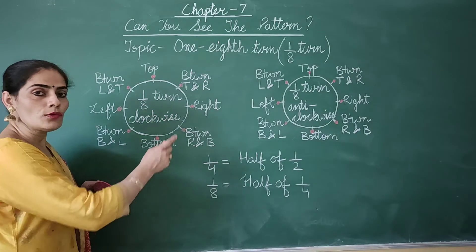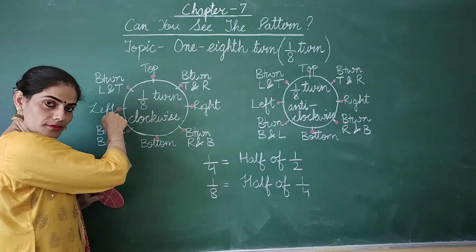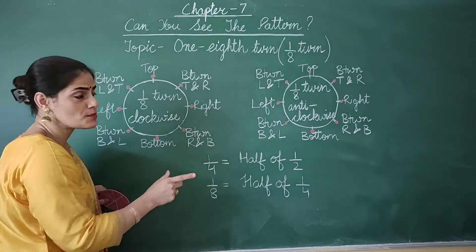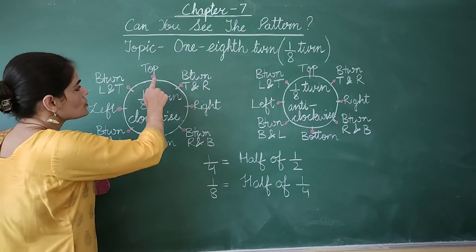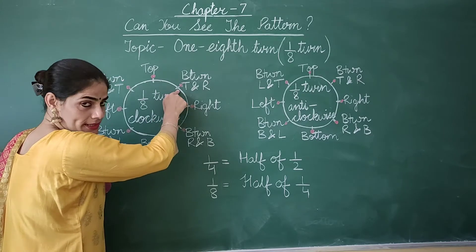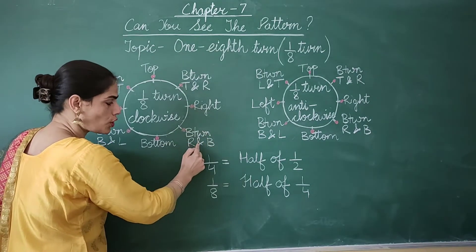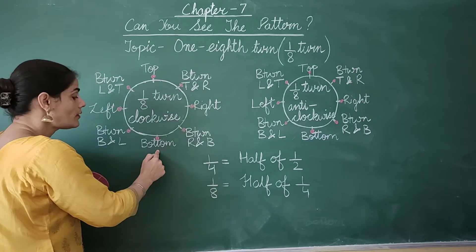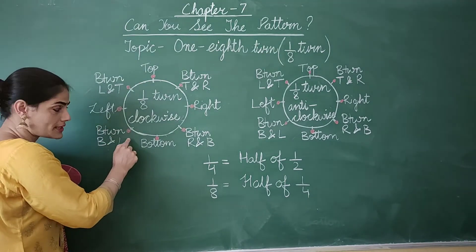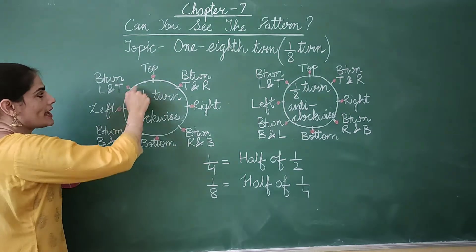In the one-fourth turn, the positions were top, right, bottom, and left. So in one-eighth, there will be four more positions between them. Top is there, then there is a position exactly between top and right, then it's right, then there is a position between right and bottom, then we have bottom, then a position between bottom and left, then we have left, and then one more new position between left and top.